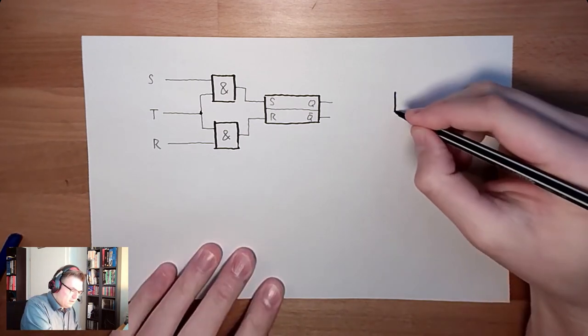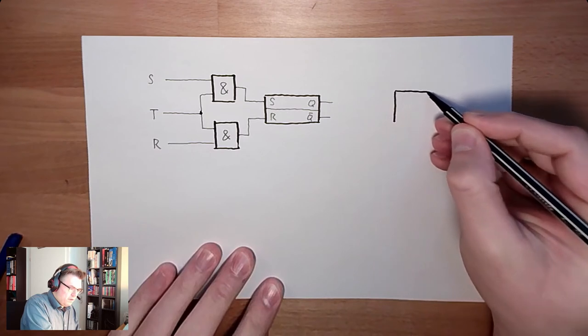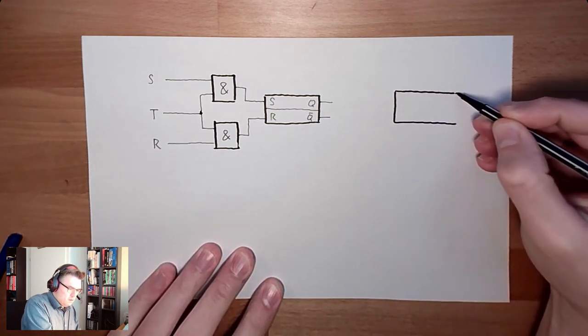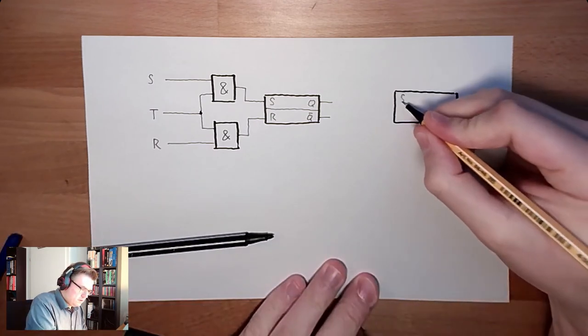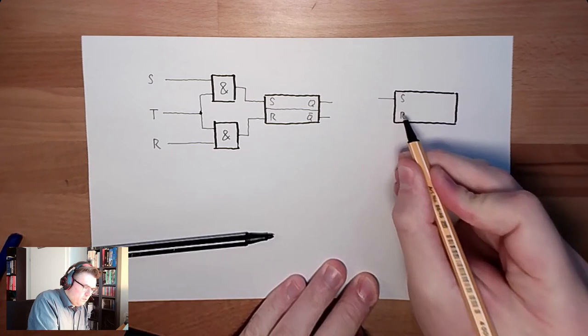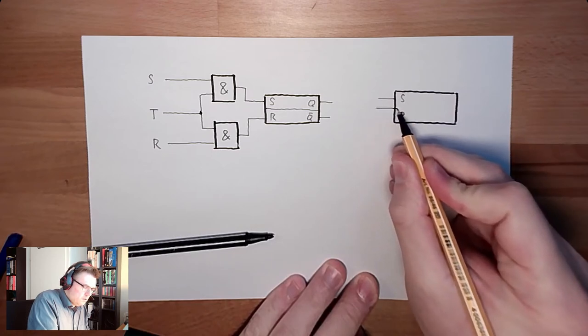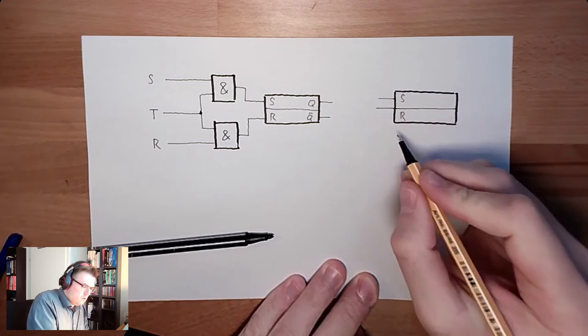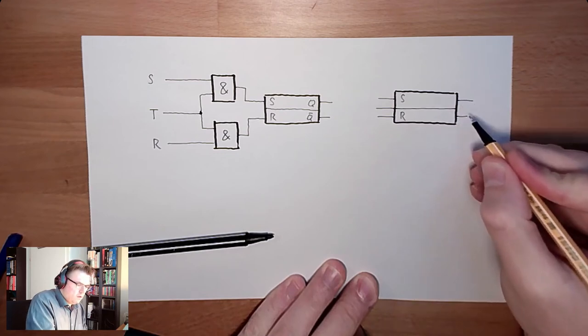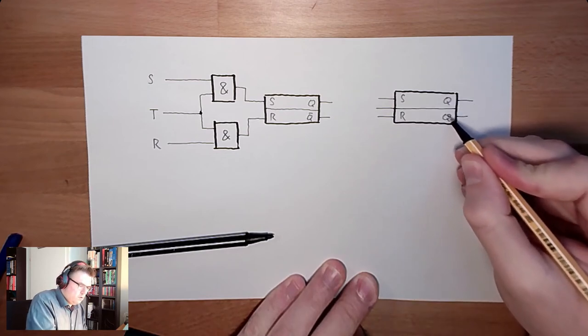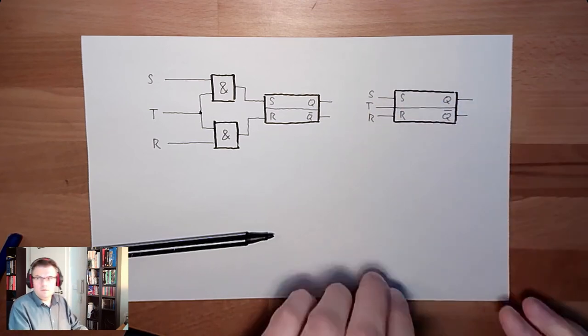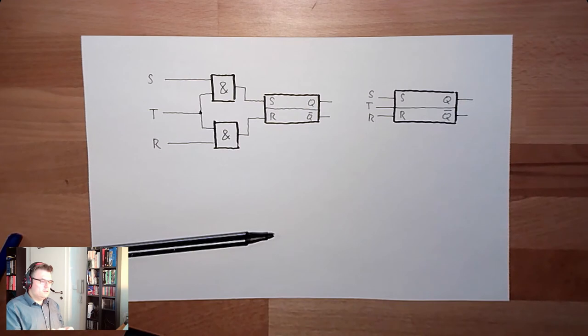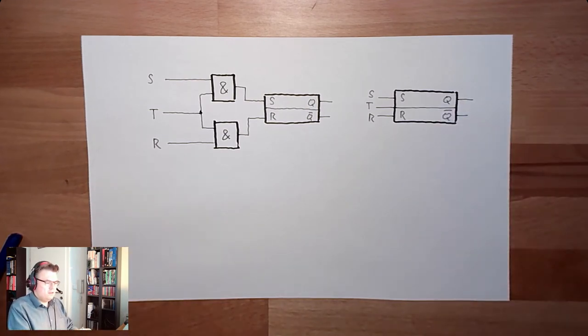We're extending the symbol of the memory then. So this is S, R input. Here are three inputs now. The output Q. And here is S, R and T. This is the symbol of a static input or a static trigger input. Level triggered.